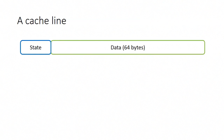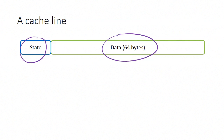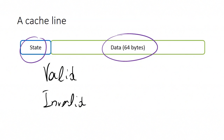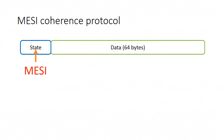For describing MESI, let's see what a cache line that does not implement coherence looks like. A cache line comprises a state and 64 bytes of data. The state can take two values: valid, indicating the data in this cache line can be used by the core, or invalid, where the cache line contains garbage and the data should not be used by the core.